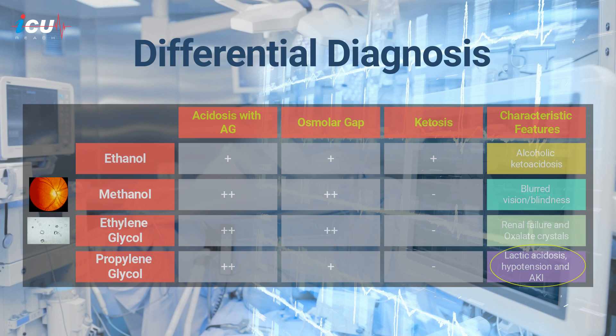Other conditions that can cause metabolic acidosis with high anion gap but a smaller increase in osmolar gap include severe chronic kidney disease without regular dialysis, diabetic ketoacidosis, lactic acidosis, and paraldehyde intoxication.